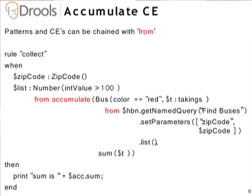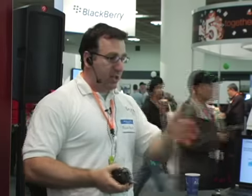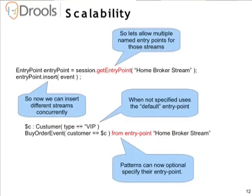Drools Fusion is about event processing. Events are typically streams, JMS, continually coming into your engine. We had to rethink how a rule engine works to extend it to event management. The rule engine is a single point of entry, which is a bottleneck, so we extended it with entry points — essentially partitions to allow parallel throughput across different streams. Each entry point is normally hooked up to a stream so you can get particular patterns and hook them directly to an entry point, with joins across relevant streams and working memory.